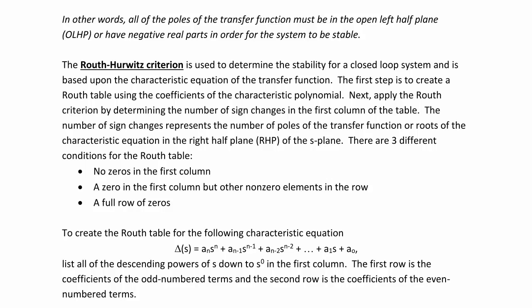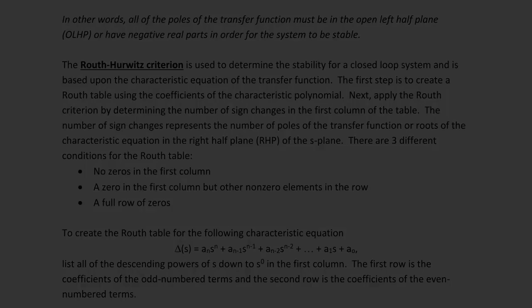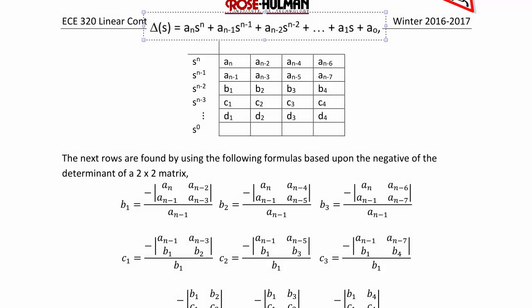You create the Routh table for the characteristic equation: delta of S equals a_n * S^n plus a_(n-1) * S^(n-1) plus ... plus a_1 * S plus a_0. List all descending powers of S down to S^0 in the first column. The first row contains the coefficients of the odd-numbered terms, and the second row contains the coefficients of the even-numbered terms. So the first row is S^n with coefficients a_n, a_(n-2), a_(n-4), a_(n-6), and the second row is S^(n-1) with coefficients a_(n-1), a_(n-3), a_(n-5), and so on.